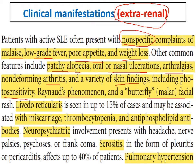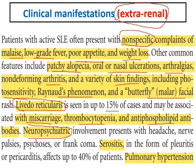Malar or butterfly facial rash is characteristic. Livedo reticularis is present in about 15 percent of cases, and when found, we should search for miscarriage, thrombocytopenia, and antiphospholipid syndrome, as it is usually associated with it. CNS involvement includes neuropsychiatric manifestations such as headache, nerve palsies, psychosis, or coma in cerebritis. Serositis — pleuritis, chest pain, pericarditis — occurs in about 40 percent, and pulmonary hypertension can occur from repeated pulmonary emboli in antiphospholipid syndrome.